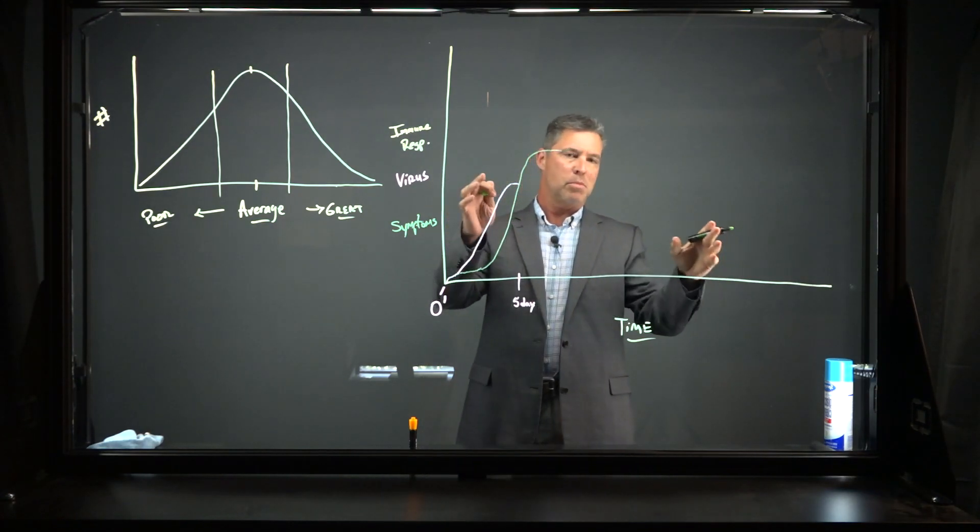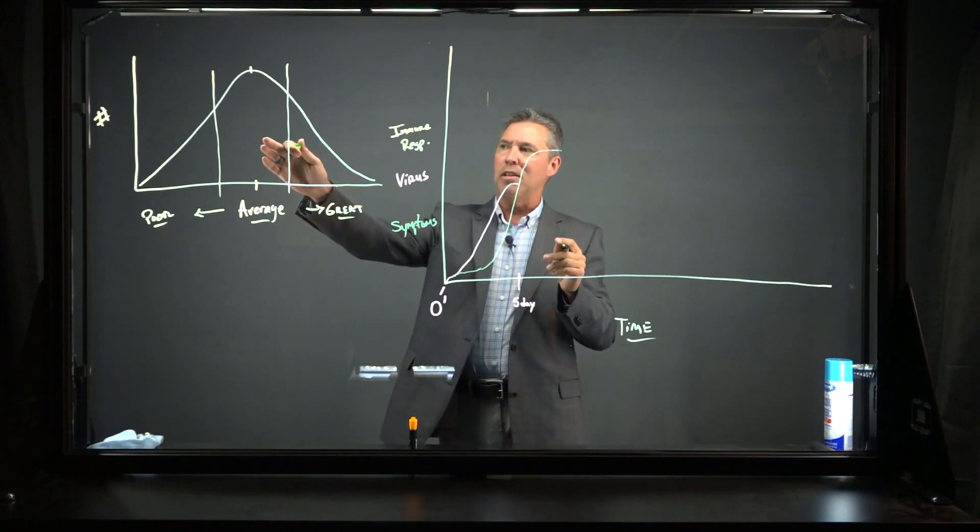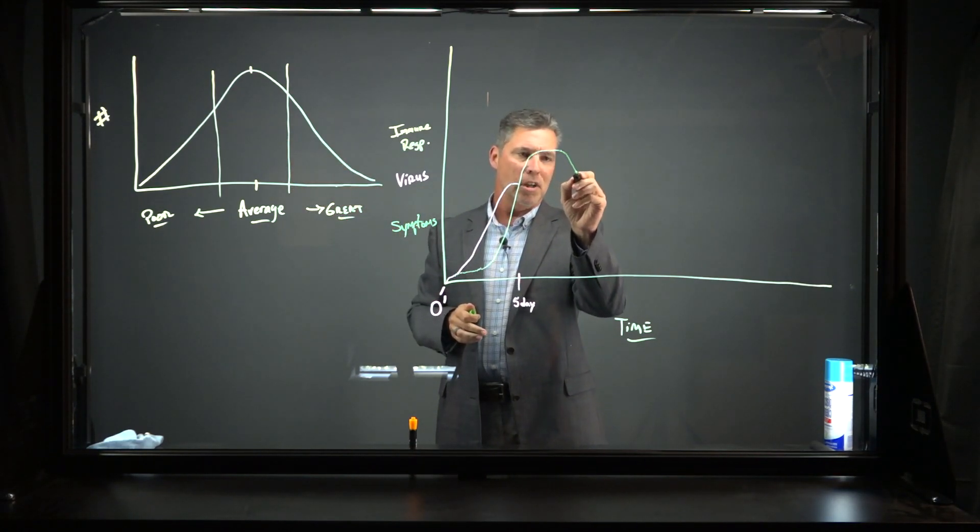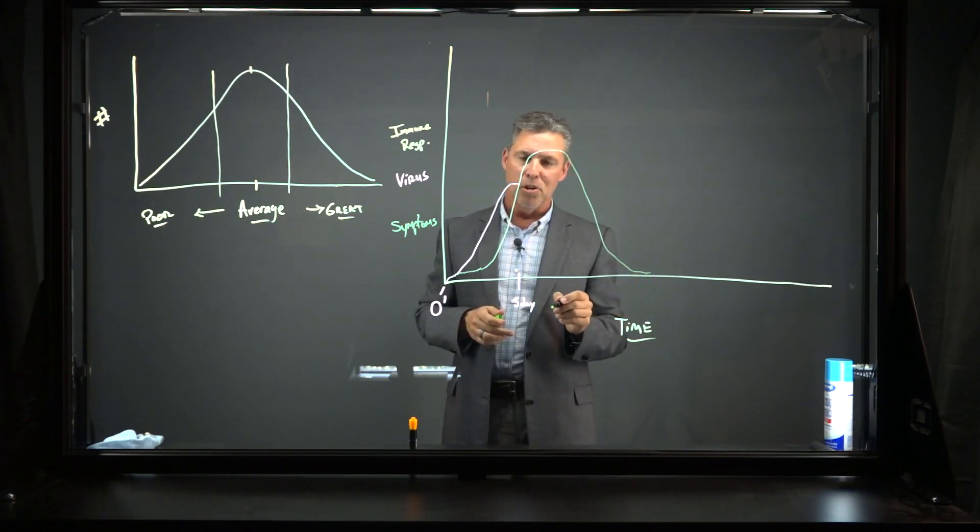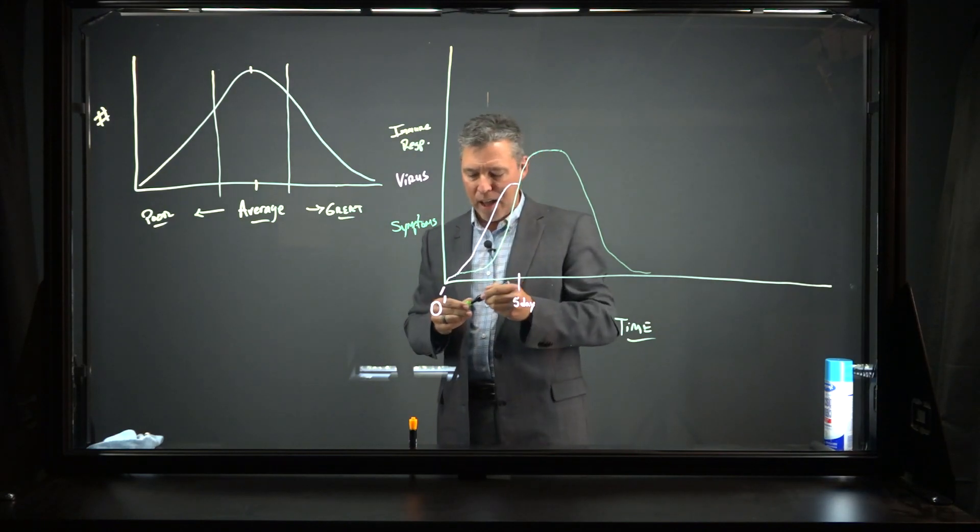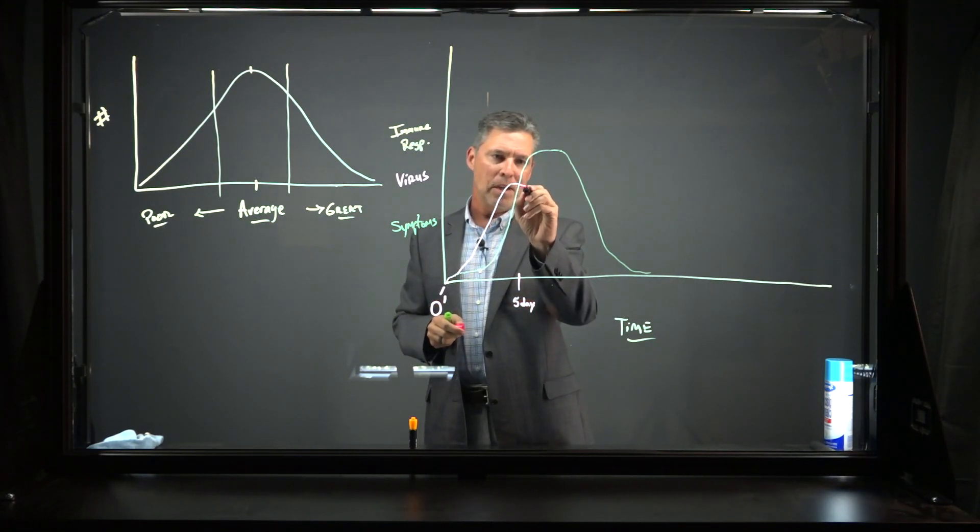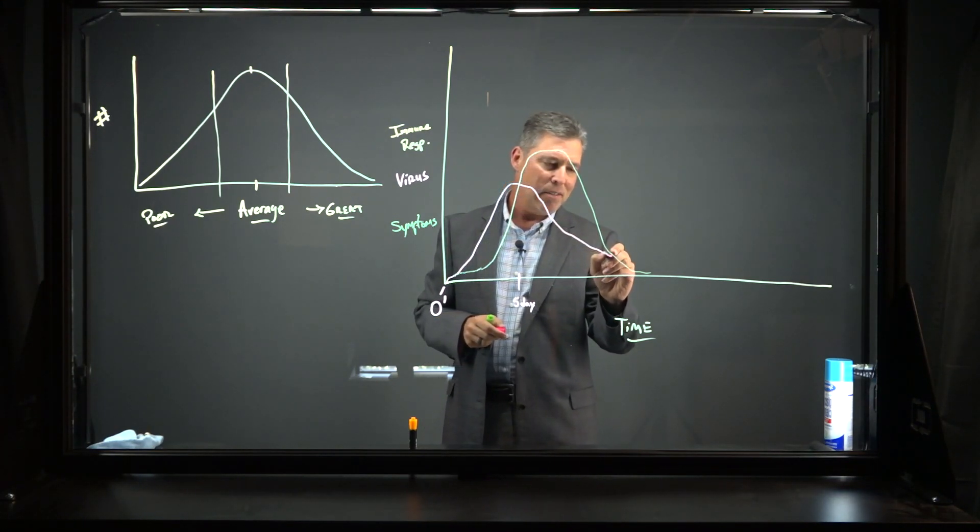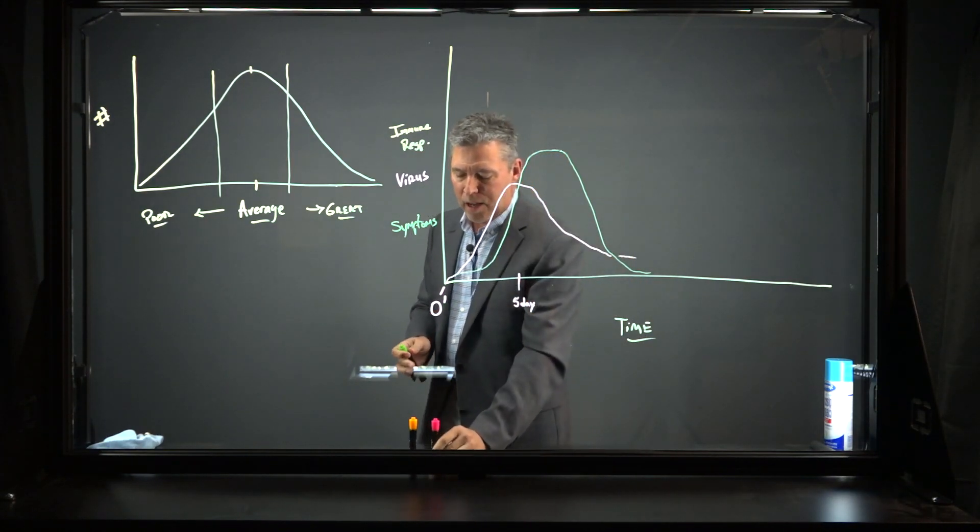This plays out differently for different people. If you're a person in the median or in the really great immune responses, then your symptoms should come back down over time, and gradually you get back to feeling pretty good. Likewise, you should also see that the viral load begins to decline over time, but it does stay kind of detectable for a period of time out here.